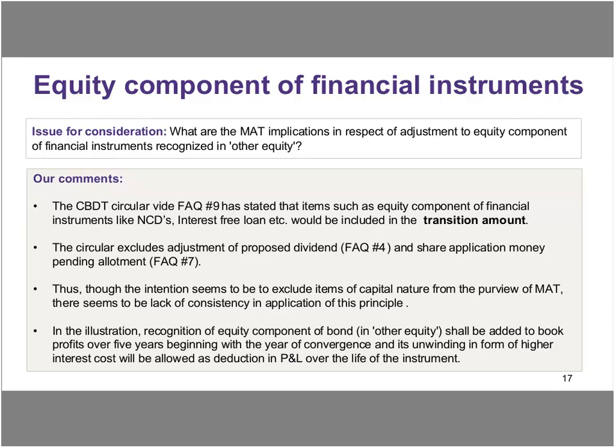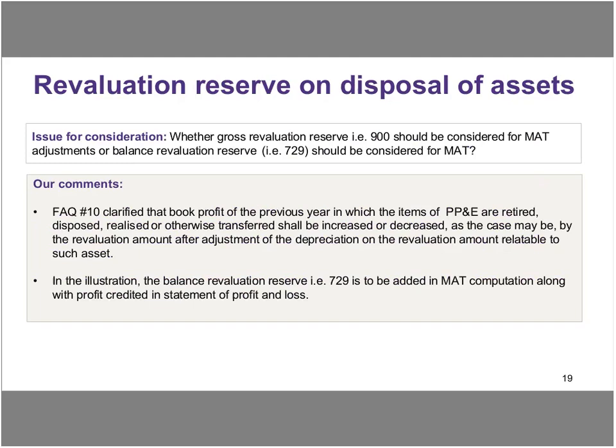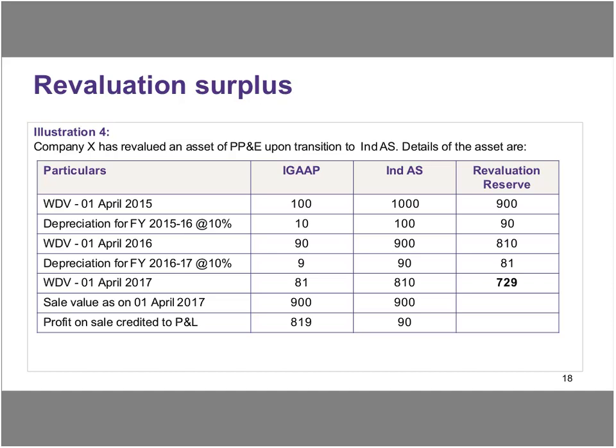Let's move to our next illustration on revaluation. To an accountant this is a very simple concept. Was there a lack of clarity earlier? Why has this FAQ been incorporated? Frankly, as far as we are concerned, it is in line with what was already there. It's just by way of bringing in further clarity to remove any iota of doubt. I think it's fairly simplistic and doesn't change the already existing principles too much. Slide 18 has a very small numerical example, in fact picked up right from the FAQ given by the CBDT.